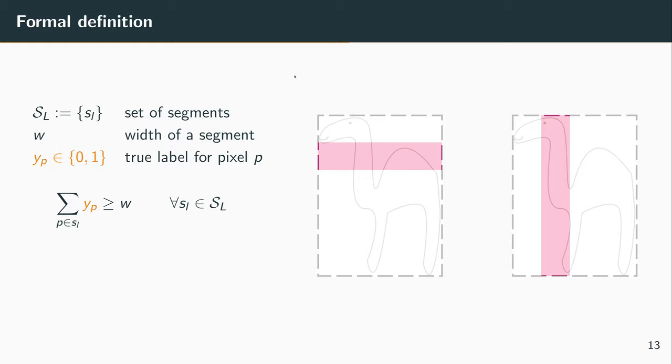So YP is a binary label, the true label that we don't have but that we are looking for. And we know that for a fact, because of this tightness prior, that if we sum the true label over all the pixels in the segment, so over all the pink pixels, then that sum will be greater or equal to W. And this is true for all segments in our segment set.